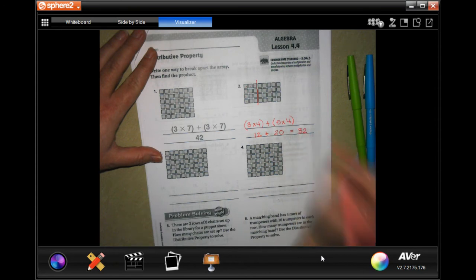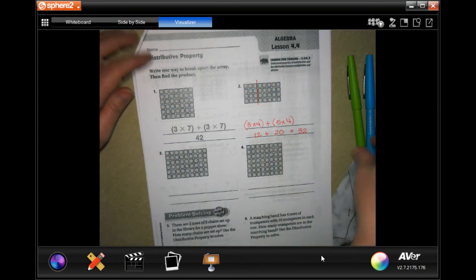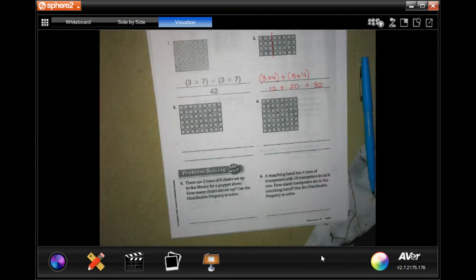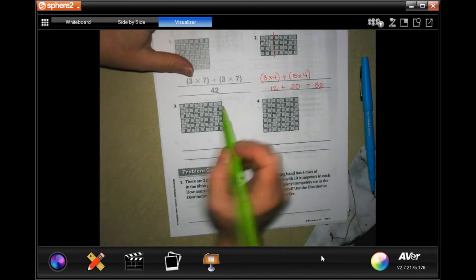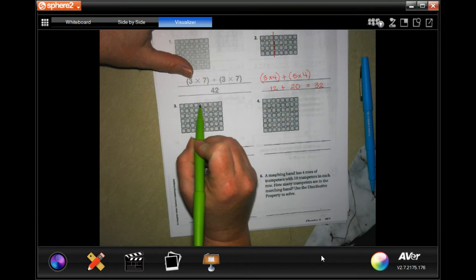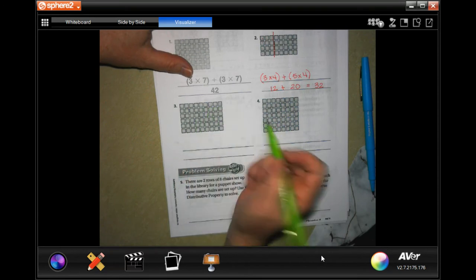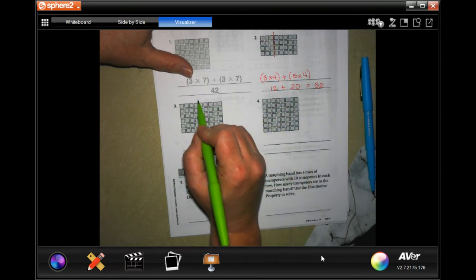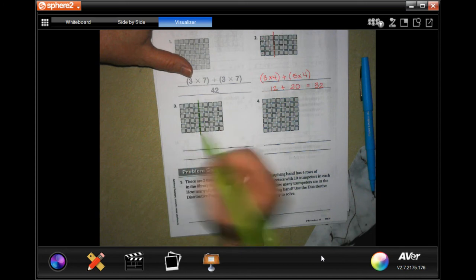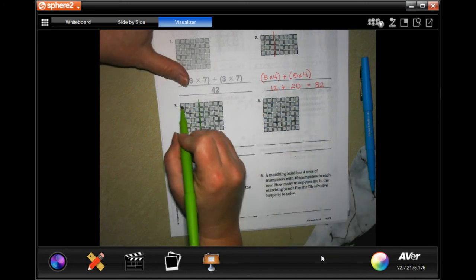So our total is 32. We're going to do one more. All right, so I'm going to split this one. This one has one, two, three, four, five, six, seven, eight, nine across, so I'm going to do five and four. I'm going to go one, two, three, four.